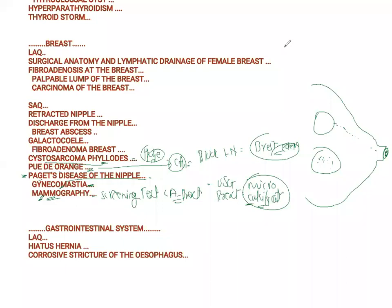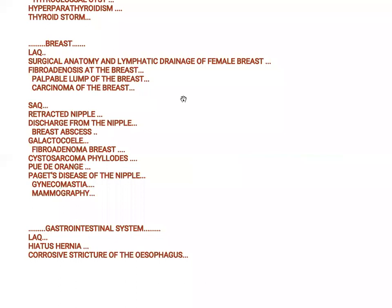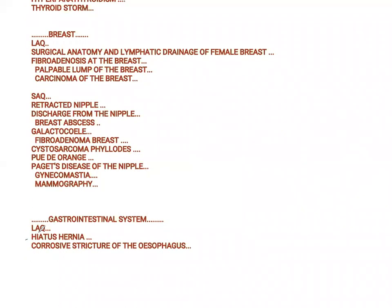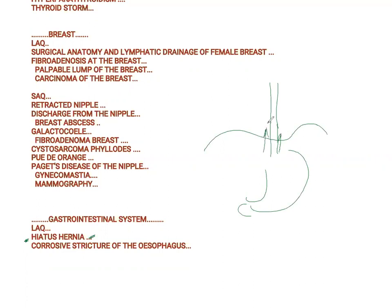Another important topic from the GI tract — hiatus hernia, very commonly asked. Draw the diagram: there's an esophagus, there's a stomach, and the stomach comes up into the thoracic cavity. There are two types — it can be sliding as well as rolling. To have clinical features addressed, we require a surgical approach: you give an incision, you pull, and then you fix.